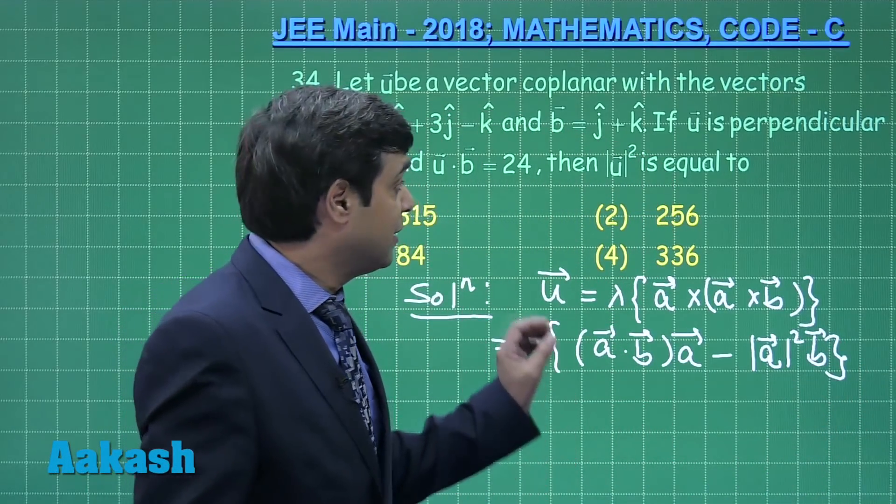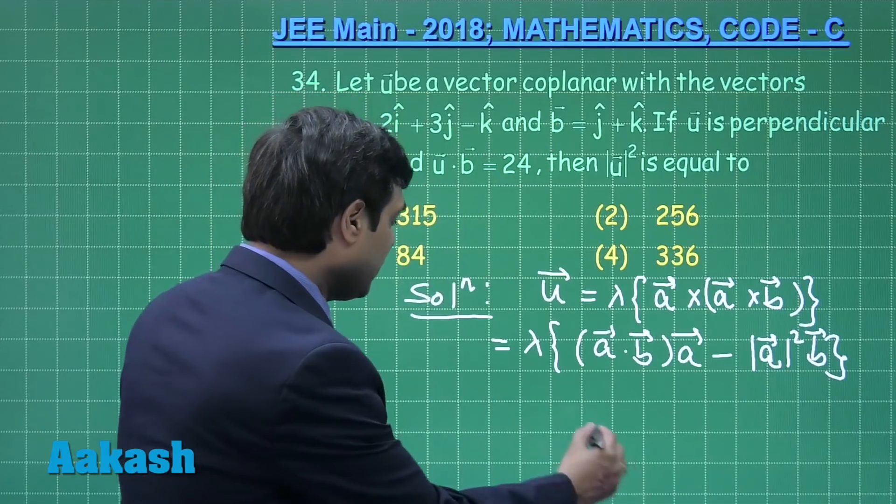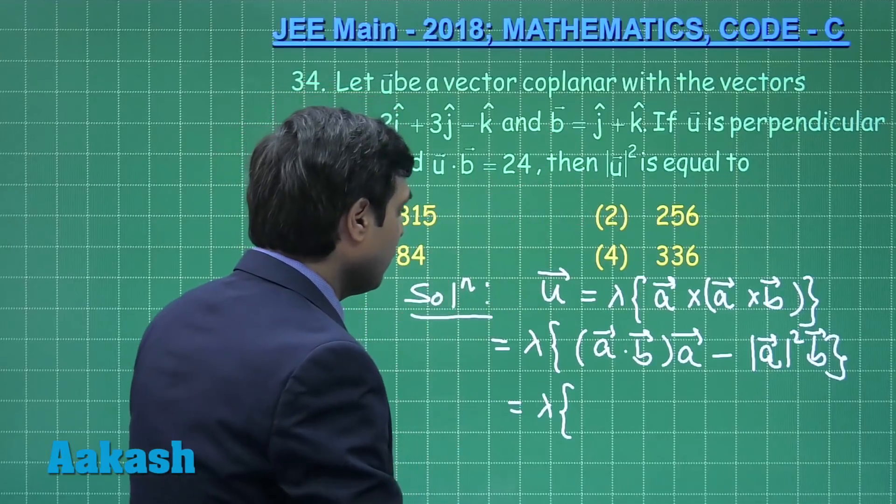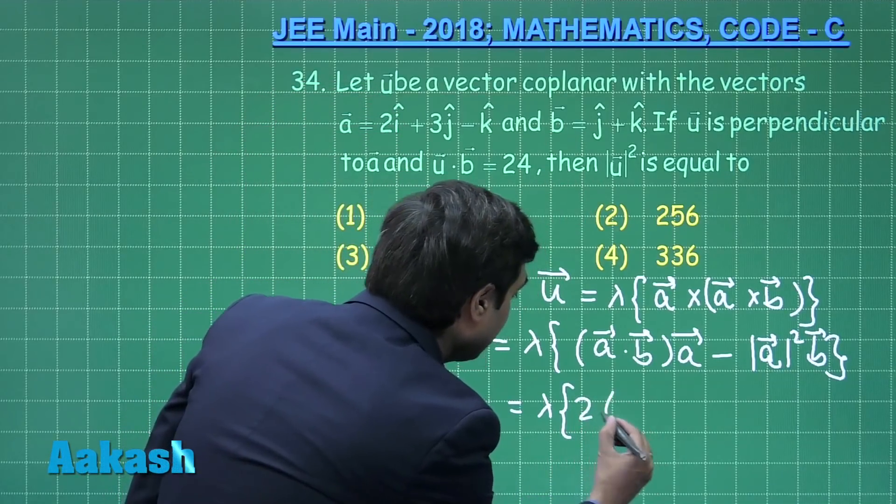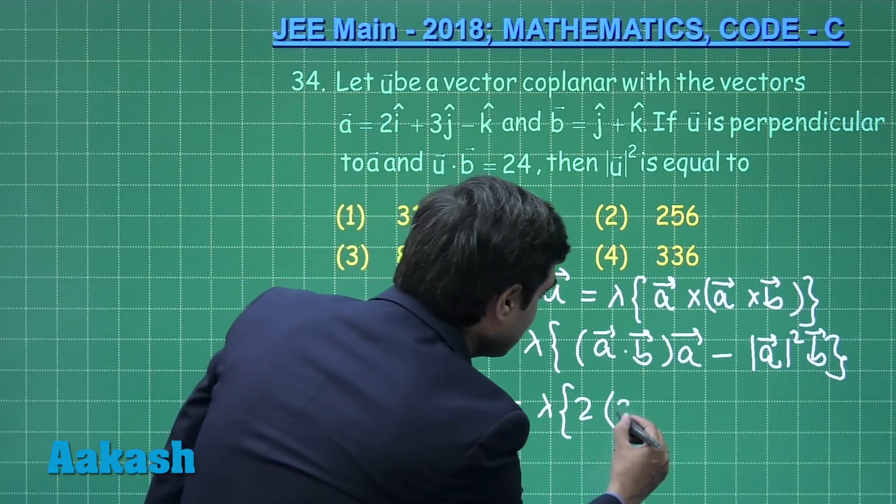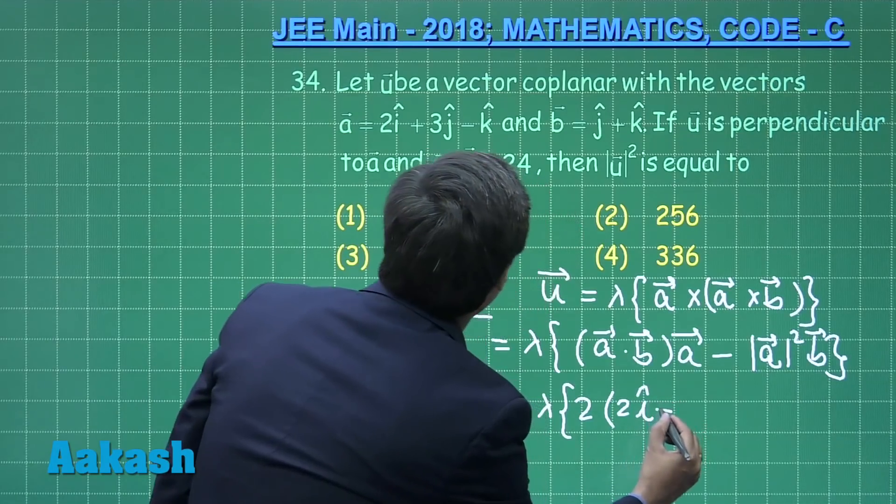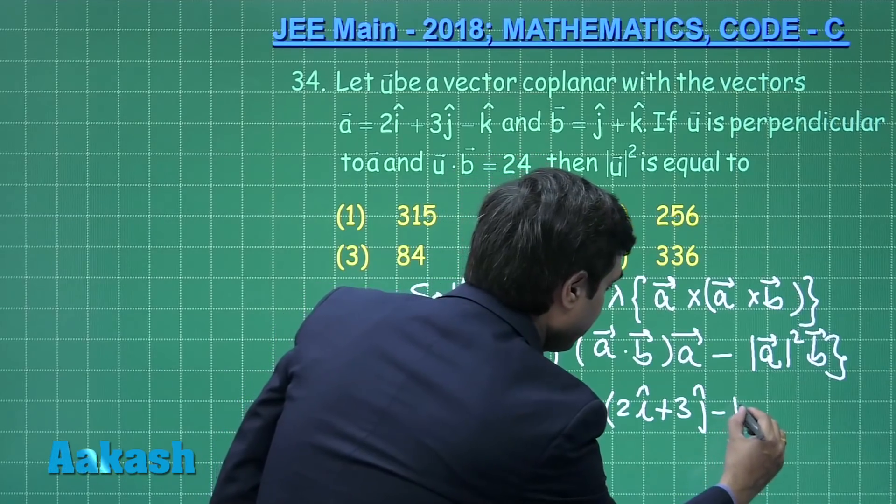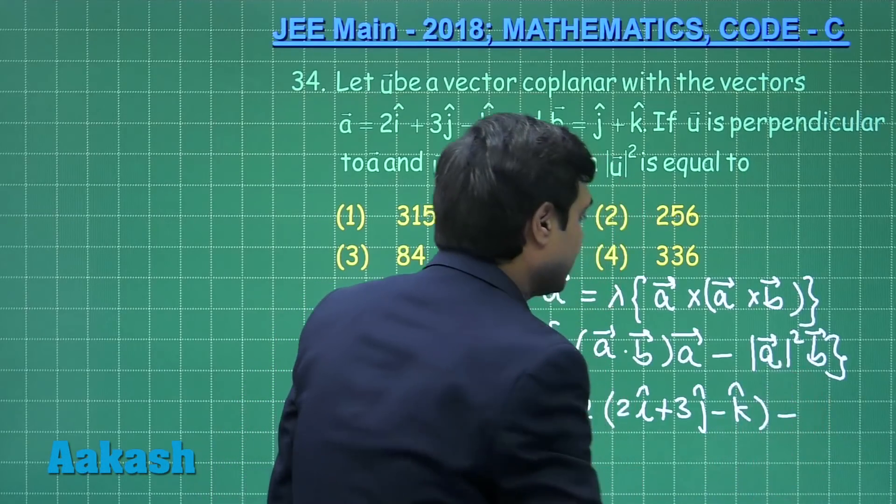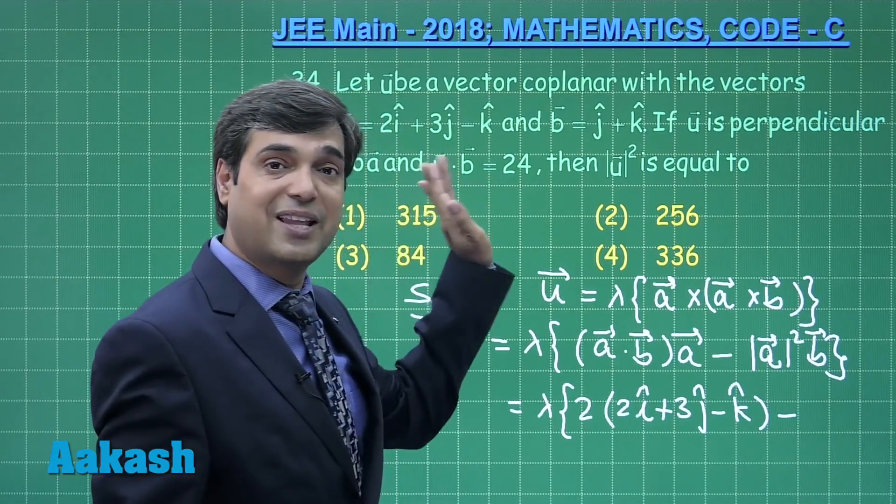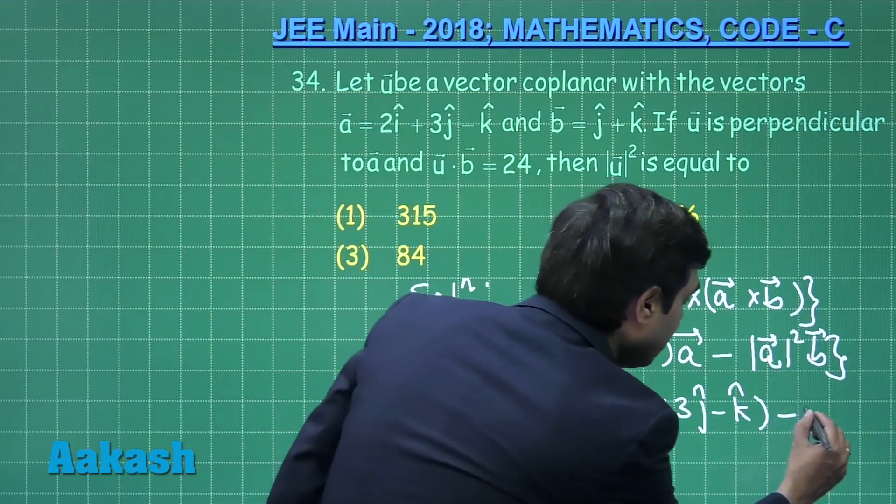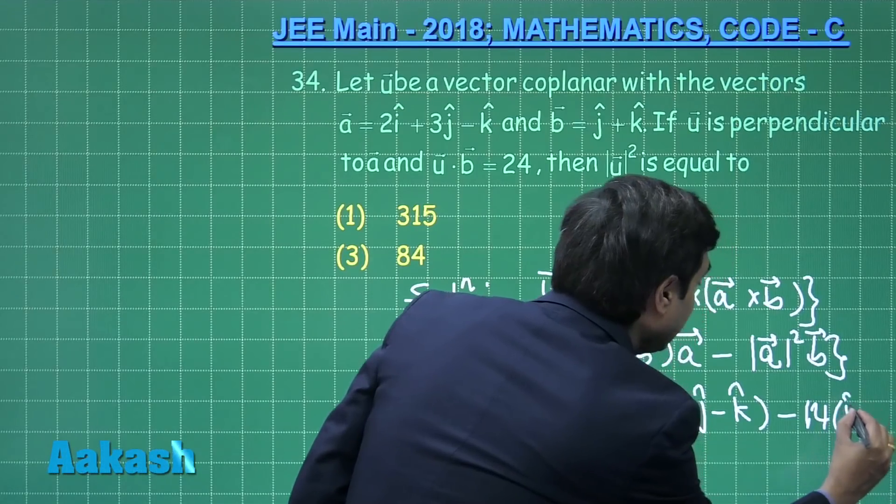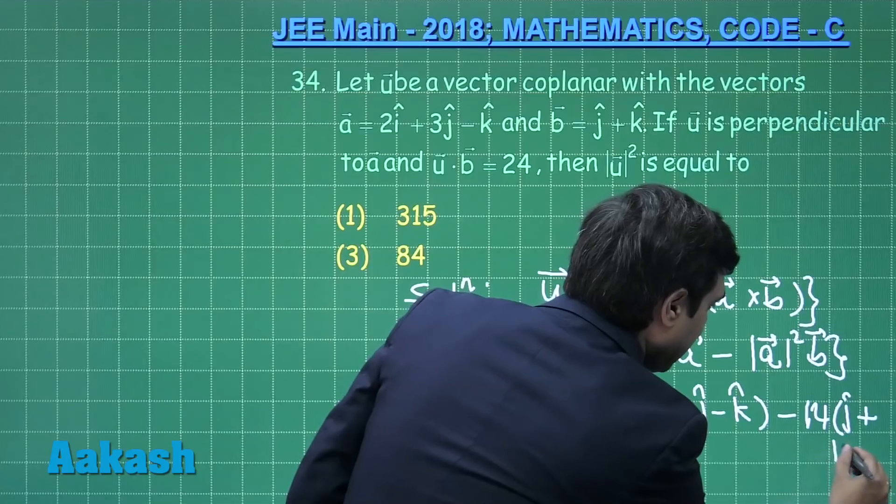This is u vector. A and b are given to me, so I can write here a dot b by taking dot product of the two, which is 2. Put the value for a vector, which is 2i plus 3j minus k, minus mod a square, which is 4 plus 9 plus 1, that is 14, b vector, that is j plus k.